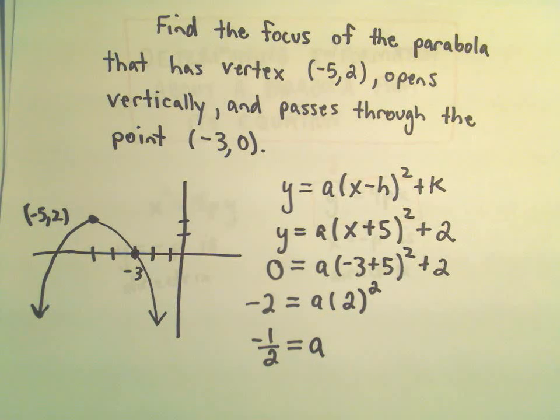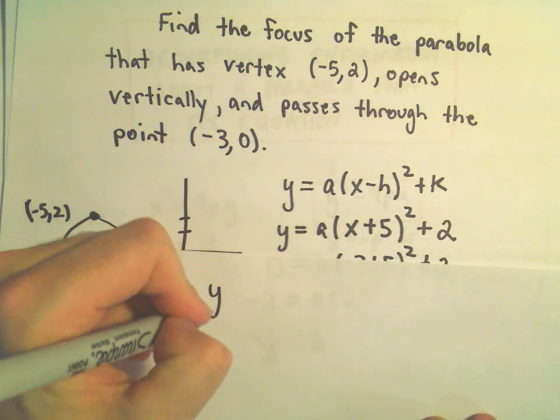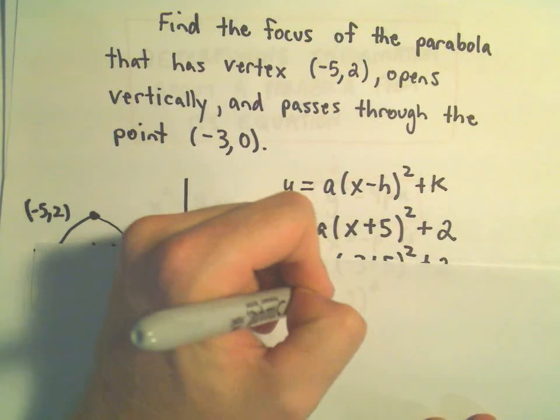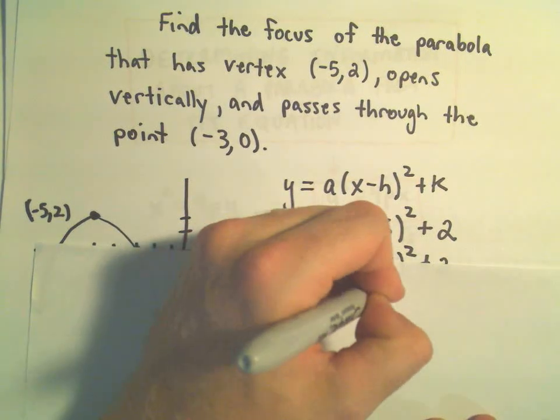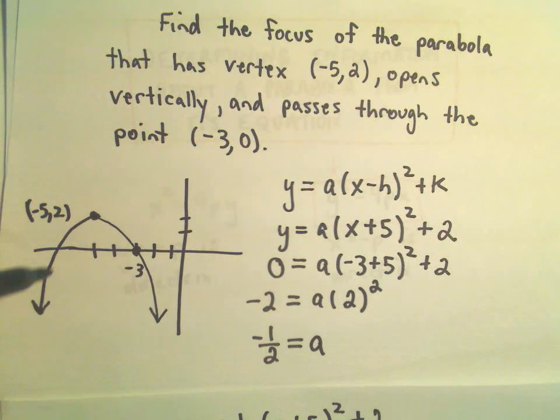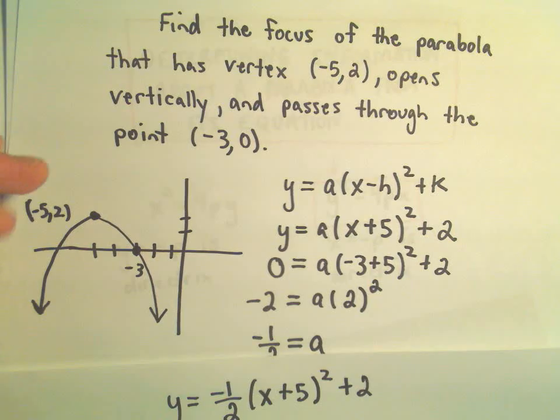Alright, so the equation of our parabola would be y equals negative 1/2(x + 5) squared plus 2. And that certainly makes sense that my a value should be negative because this parabola is opening downwards.